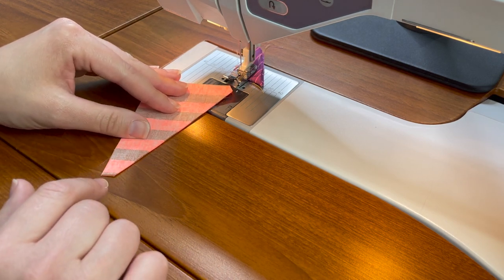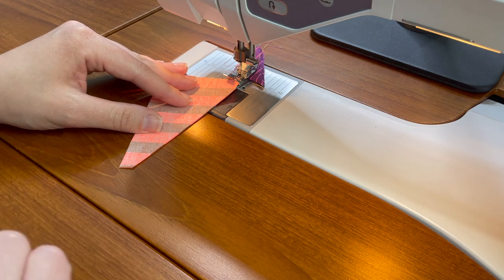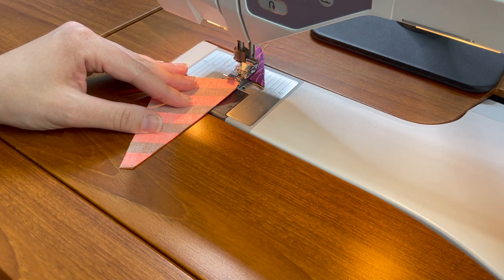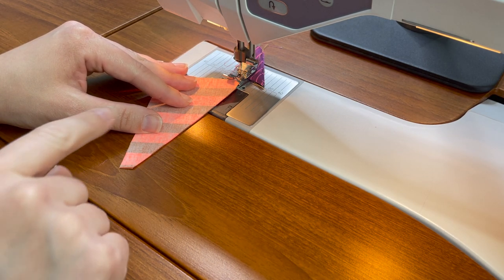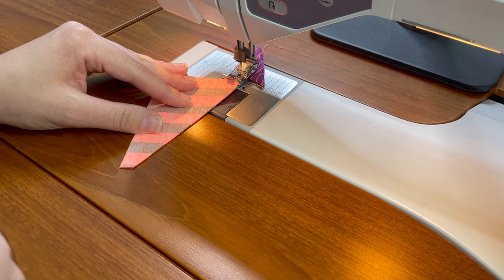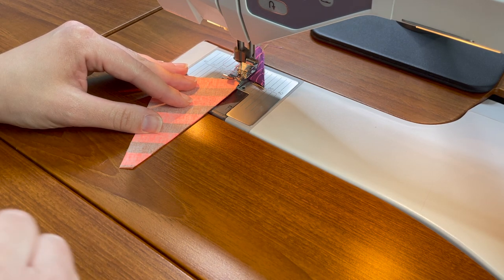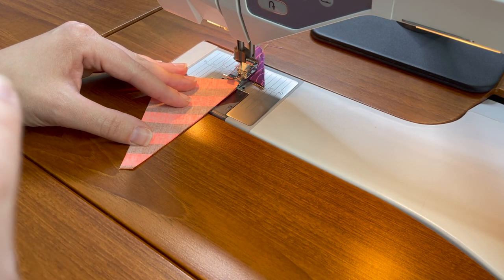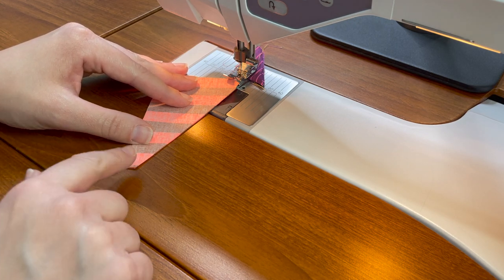Set up your machine to a scant quarter inch seam. If you're not familiar with scant I'll link below some additional information. A scant quarter inch seam is just one thread over and accounts for what thread will be in the seam allowance so that your block will measure perfectly what it should measure in the following steps.